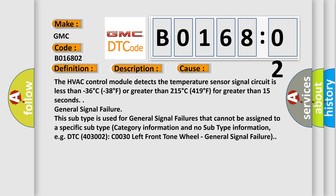The HVAC control module detects the temperature sensor signal circuit is less than minus 36 degrees Celsius (minus 38 degrees Fahrenheit) or greater than 215 degrees Celsius (419 degrees Fahrenheit) for greater than 15 seconds.